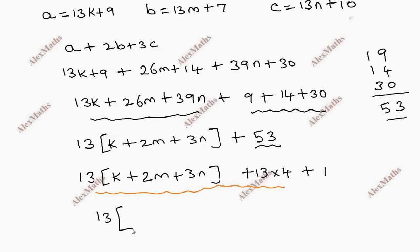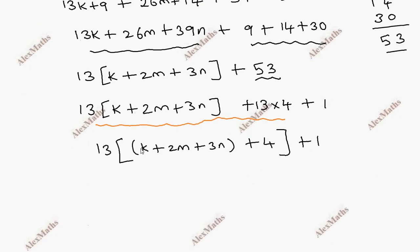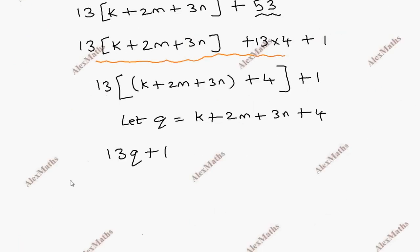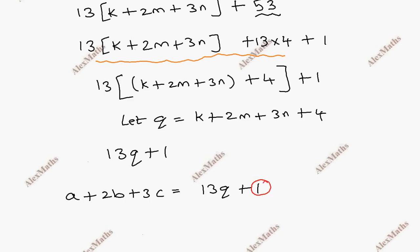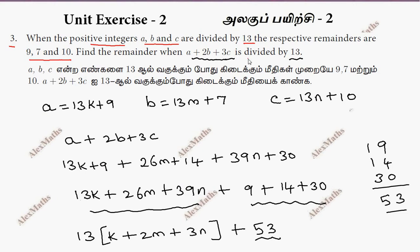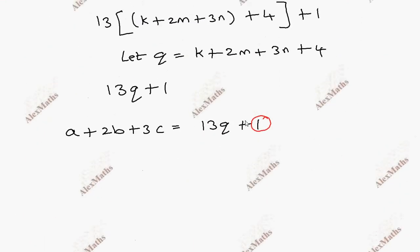So we have 13 bracket open, k plus 2m plus 3n plus 4. Let q equal k plus 2m plus 3n plus 4. The entire expression is 13q plus 1. Therefore, for A plus 2B plus 3C divided by 13, the remainder equals 1.